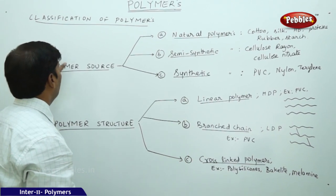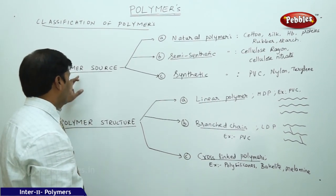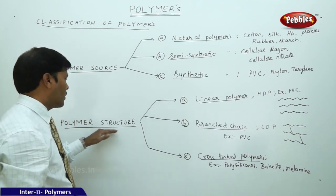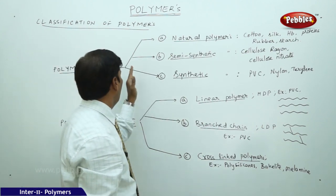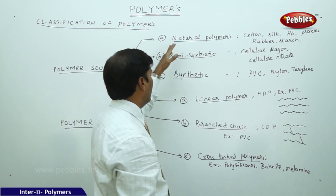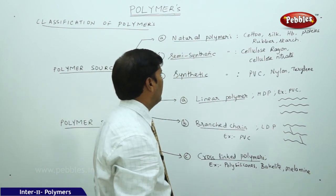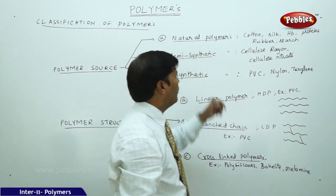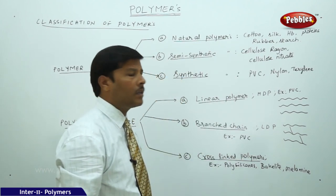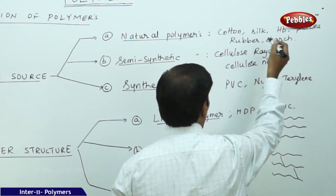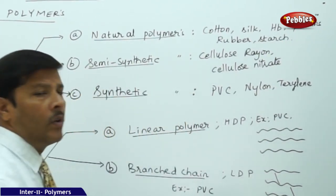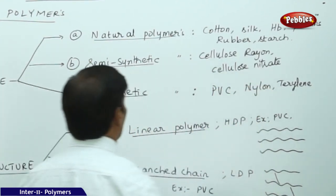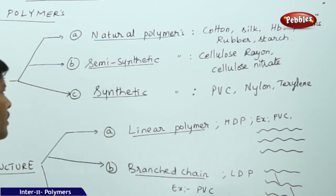In the classification of polymers, we consider the source and structure. Based on source, polymers are classified into three types: natural polymers (examples: cotton, silk, hemoglobin, proteins, rubber, starch), semi-synthetic polymers (examples: cellulose rayon and cellulose nitrate).